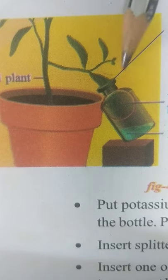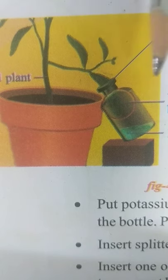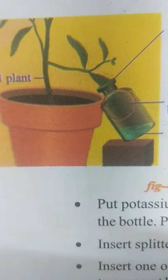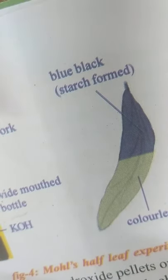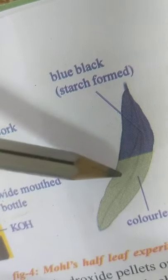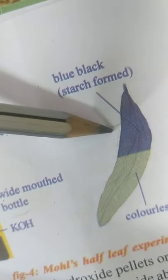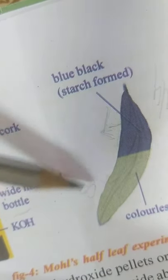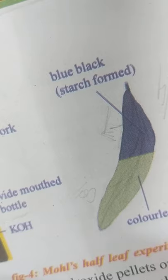After 2 to 3 hours, you can remove the bottle and cork, detach this long leaf from the plant, and conduct the iodine test. After conducting the iodine test, the leaf appears like this. The part of the leaf that was kept outside turns deep blue in color because all 4 factors were available. But the part that was inside the bottle does not turn blue because, except for carbon dioxide, all other factors were available. Because of this experiment, you can confidently say that carbon dioxide is essential for the process of photosynthesis.